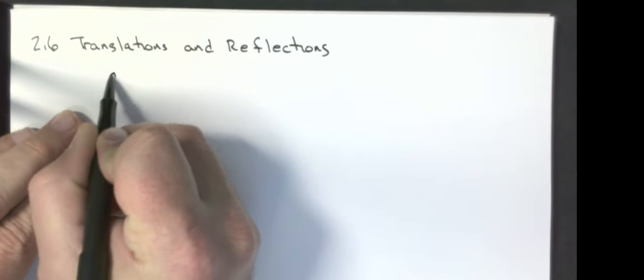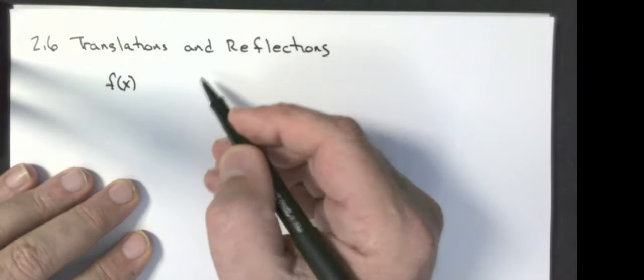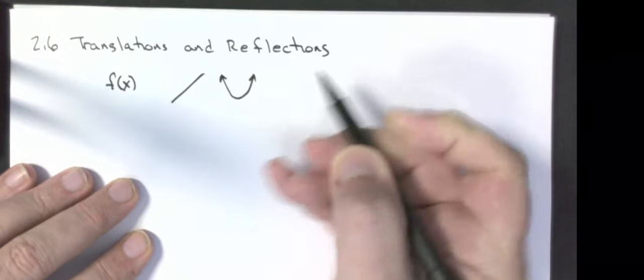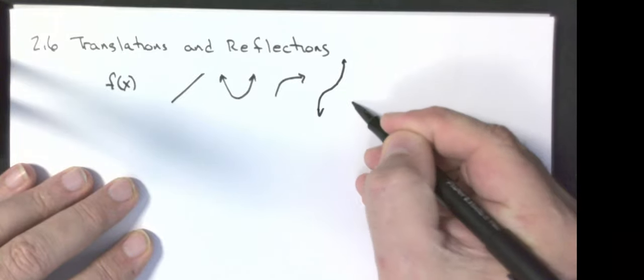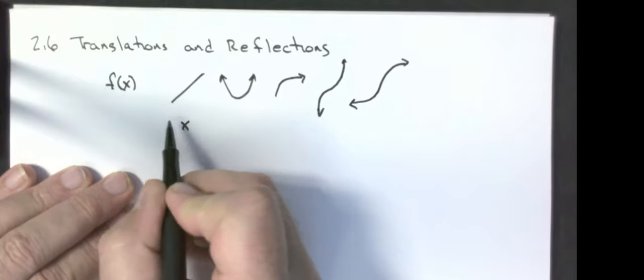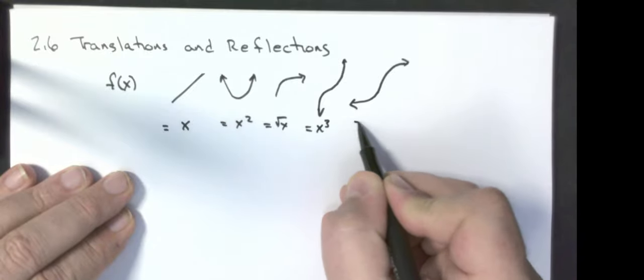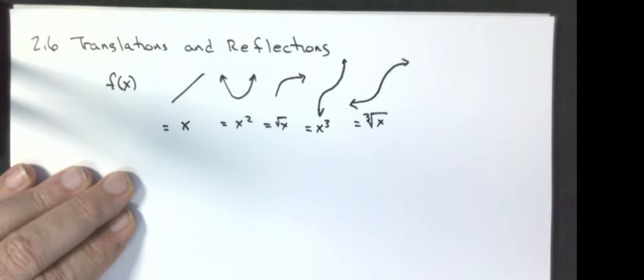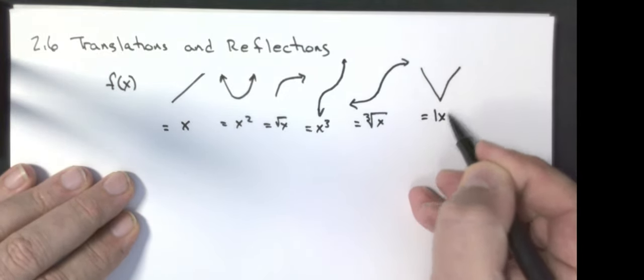If I start out with the graph f of x and then I do things to that graph, it's really easy to see what happens. I'm just going to make a table and then we're going to do some examples. This is when you need to know your parent functions: your linear function, your x squared function, your square root function, your x cubed function, cube root of x function, and the absolute value of x. Those are on the front of my wall.